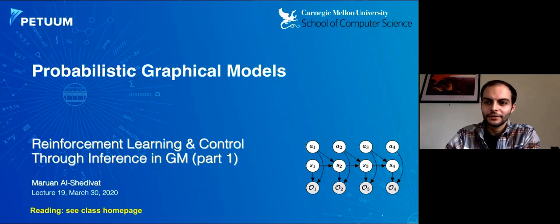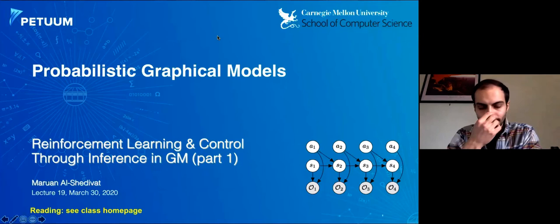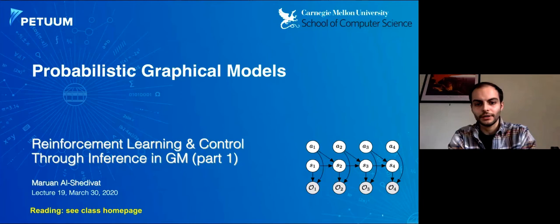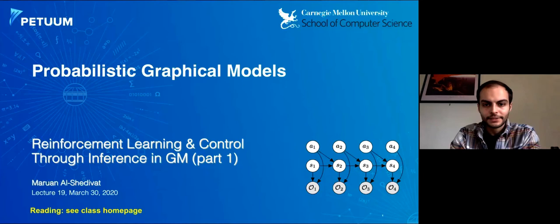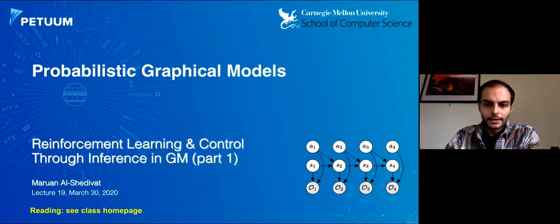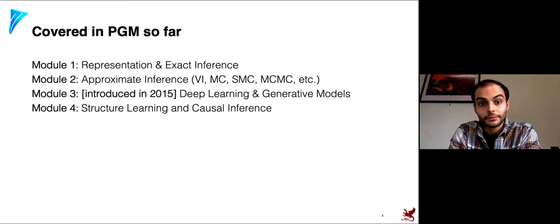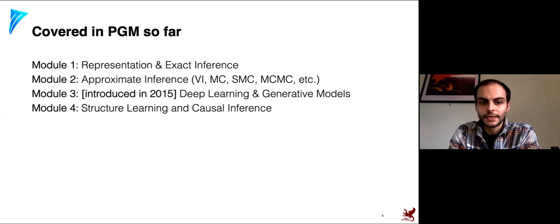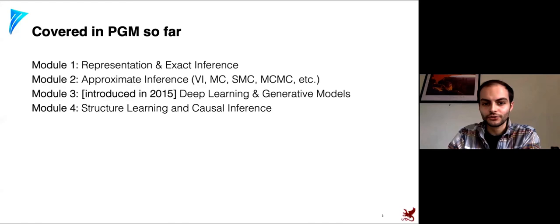Thank you Eric for the quick intro. Today's lecture is the first part of a two-part series on reinforcement learning and control through the lens of probabilistic inference in graphical models. Looking at what you've covered in PGM so far: the first module was representation and exact inference, then approximate inference, deep learning and generative models, structured learning, causal inference, and now we're at module five — RL and control as inference in graphical models.